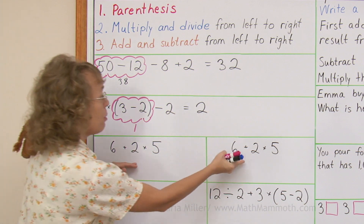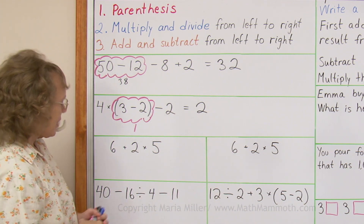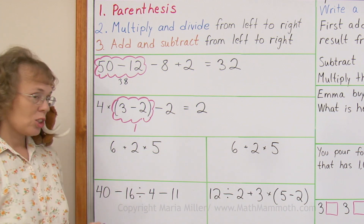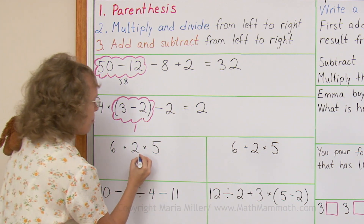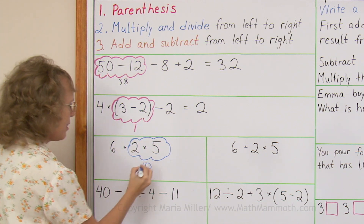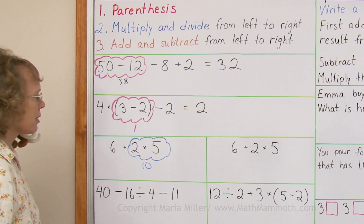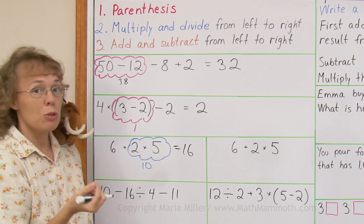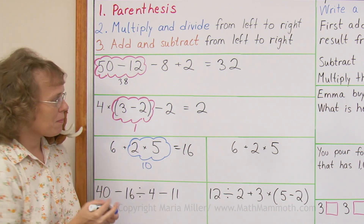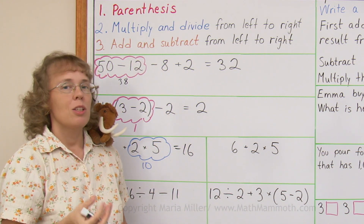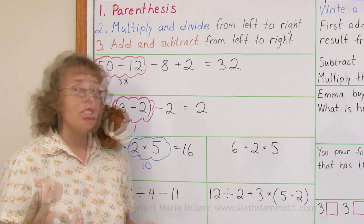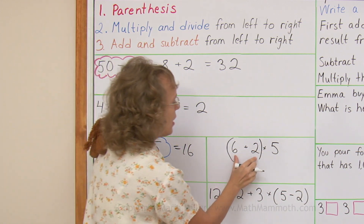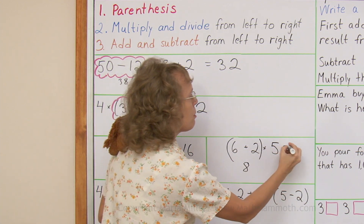Next we are going to look at these two problems, and they're the same. Let's solve this as it is written. There's an addition and multiplication, so you do the multiplication first: 2 times 5 equals 10, and then 6 plus 10 equals 16. But what if you don't want to do the multiplication first? What if you want to do the addition first? If you want to override the normal order of operations, you do that with parentheses. Now I have changed it so the addition is done first: 6 plus 2 equals 8, and 8 times 5 equals 40.